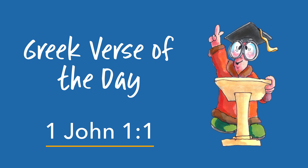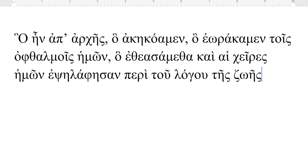First John starts with a rather complicated sentence, but the keys are to understand what that first word is and to find the main verb. You'll notice that it has a rough breathing and an accent, so it's not the article — it is the relative pronoun, neuter singular. So it's 'what was from the beginning,' and remember Greek prepositional phrases can drop off the article. Then here's another relative clause.